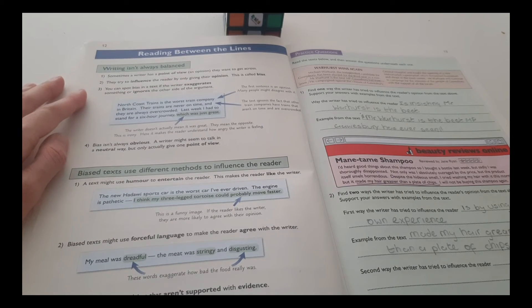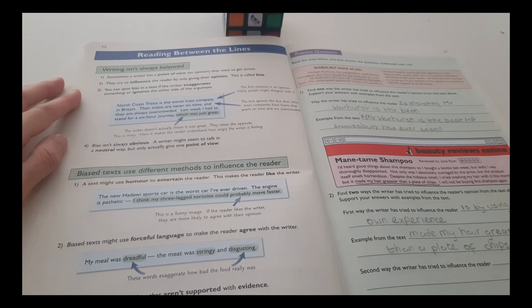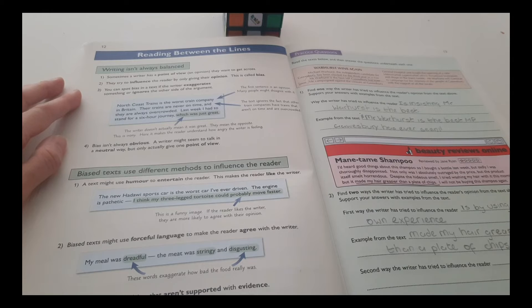Bias isn't always obvious. A writer might seem to talk in a neutral way, but only actually give one point of view.